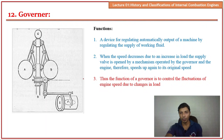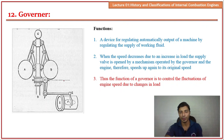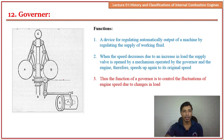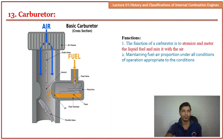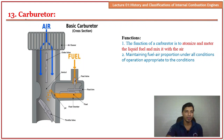The governor is a component used to reduce speed fluctuations. When the load on a vehicle increases and speed drops, the governor opens the inlet valve to inject the required amount of fuel into the cylinder, equalizing the speed. The function of the governor is to control fluctuations in engine speed. The carburetor is used in petrol engines — though now largely replaced by fuel injection systems — to supply the proper mixture of air and fuel to the engine.